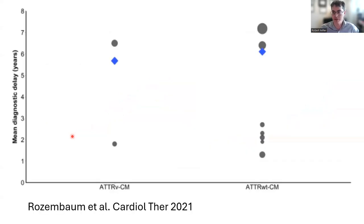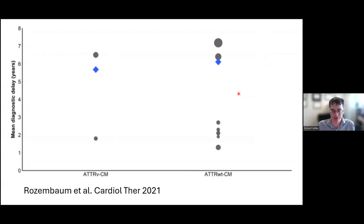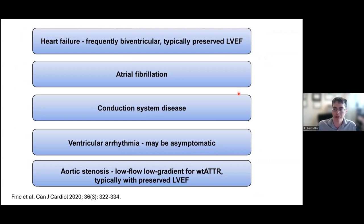We know there's a lot of amyloid out there, and we're not great at finding it. A meta-analysis looking at mean diagnostic delay across different cohorts showed that the mean diagnostic delay for hereditary ATTR patients across all studies was over five years. For wild type ATTR, it was even a little bit longer from time to first symptom presentation to diagnosis. So we know this goes on for years before it's recognized. The biggest way to avoid diagnostic delay is simply to think about it.